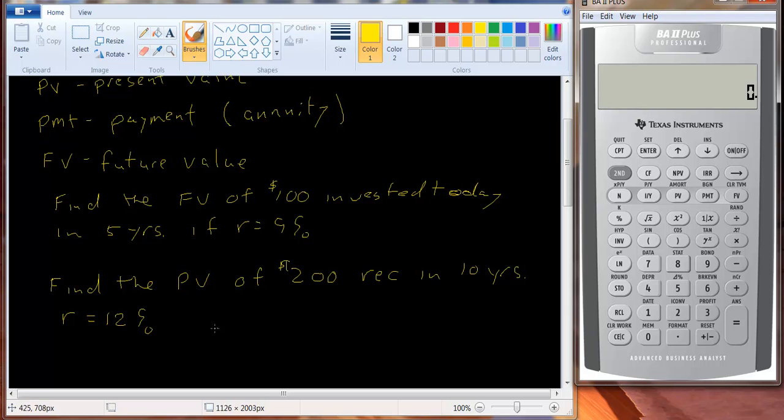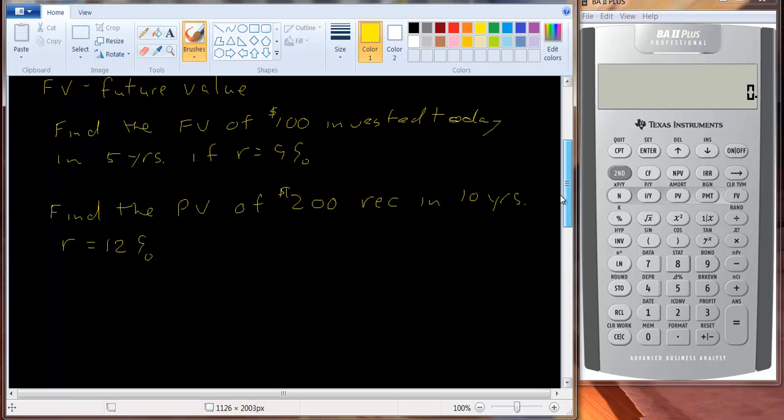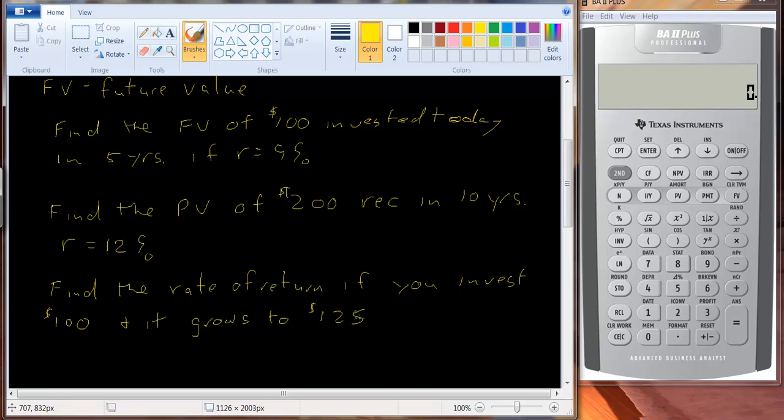You can also solve for the interest rate or the number of periods. And I'll do some tutorials on that, but let me show you how to do that on the calculator. Find the rate of return if you invest $100 and it grows to $125 in two years. Alright, so again, I want to clear my time value of money workspace.